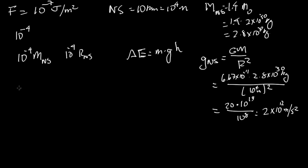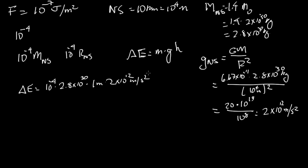The change in energy equals m, which is 10 to the minus 4 times 2.8 times 10 to the 30 kilograms, times the height of 1 meter, times g which is 2 times 10 to the 12 meters per second squared. Simplifying: 3 times 2 is 6, and combining exponents 30 plus 12 minus 4 gives 38. So the energy released is about 6 times 10 to the 38 joules.